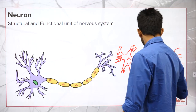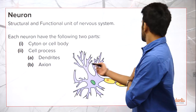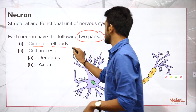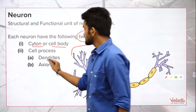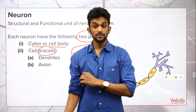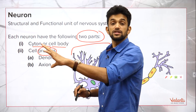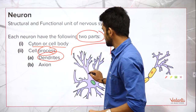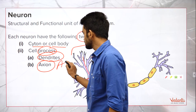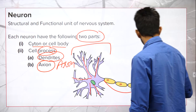Many neurons are connected one after another forming a long chain, which helps in conduction of impulses. Now, parts of the neuron: each neuron has two main parts — the cytone or cell body, and the cell process. Cell process means continuation of the cell. There are two types: dendrite and axon. The axon is the longest cell process.